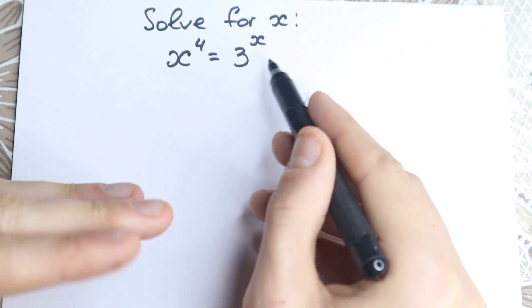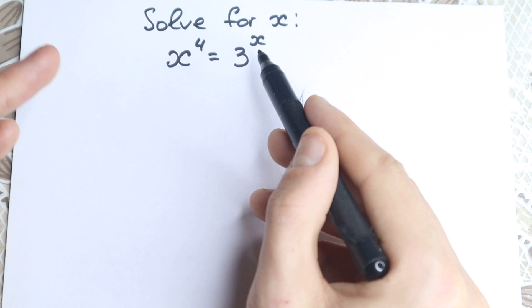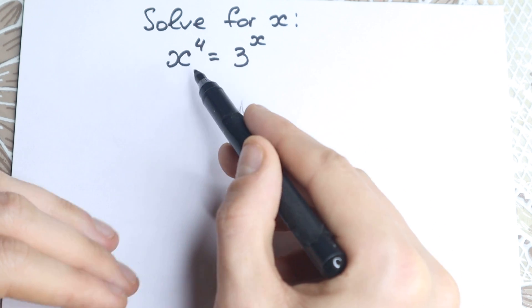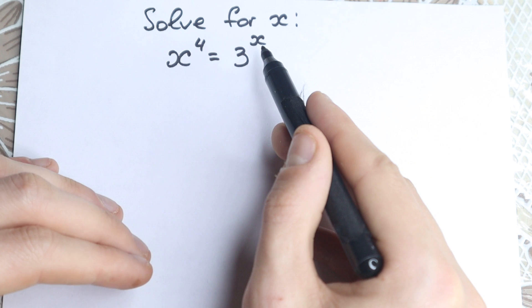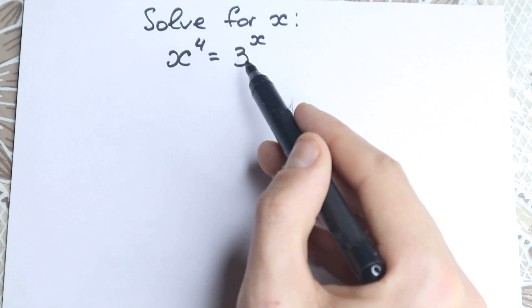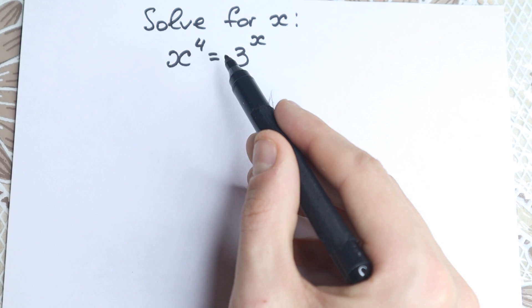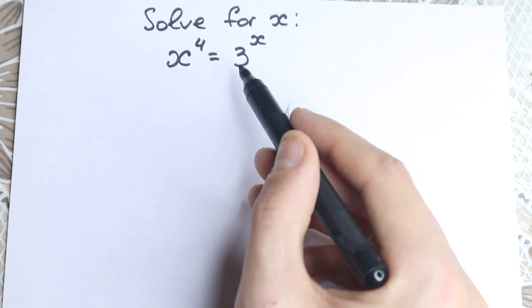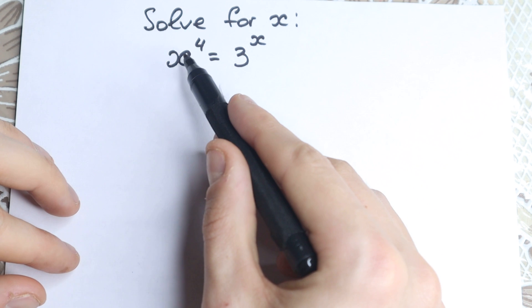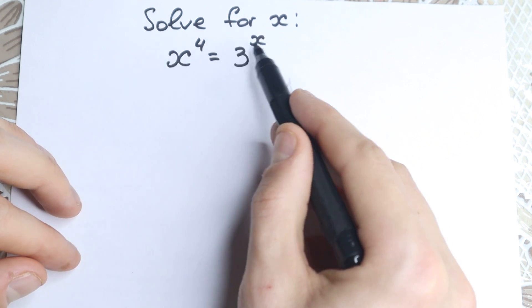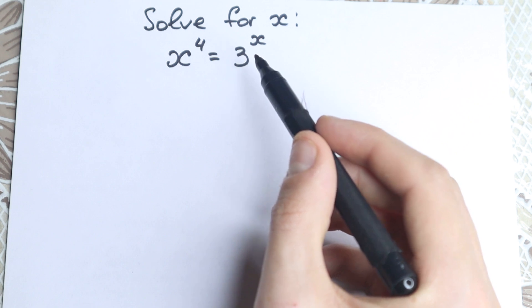On first glance this looks like an easy equation — we have 4, we have 3, close numbers, not a huge number, just x to the fourth and 3 to the x — so it looks like we can easily solve it by inspection, checking roots from 1 to 5. But this is a more complicated equation because we have x as a base on the left and x as an exponent on the right, so it's really hard to solve by inspection.